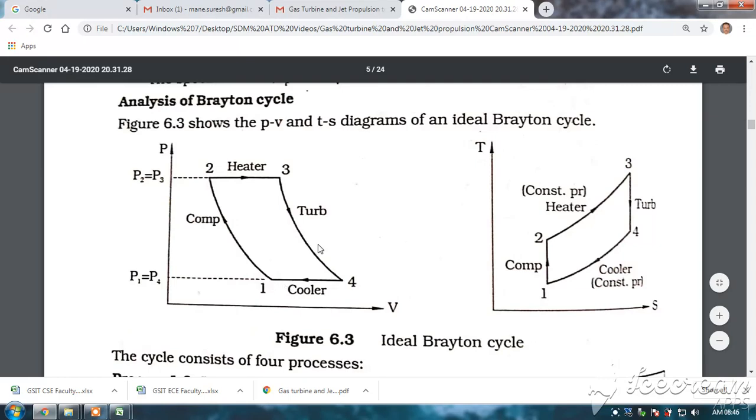So, four to one. This is a representation of TS diagram also. One to two compressor heat temperature increases. Two to three constant pressure heat addition. Again, the temperature increases along with the pressure. Pressure does not increase. Pressure is constant here.